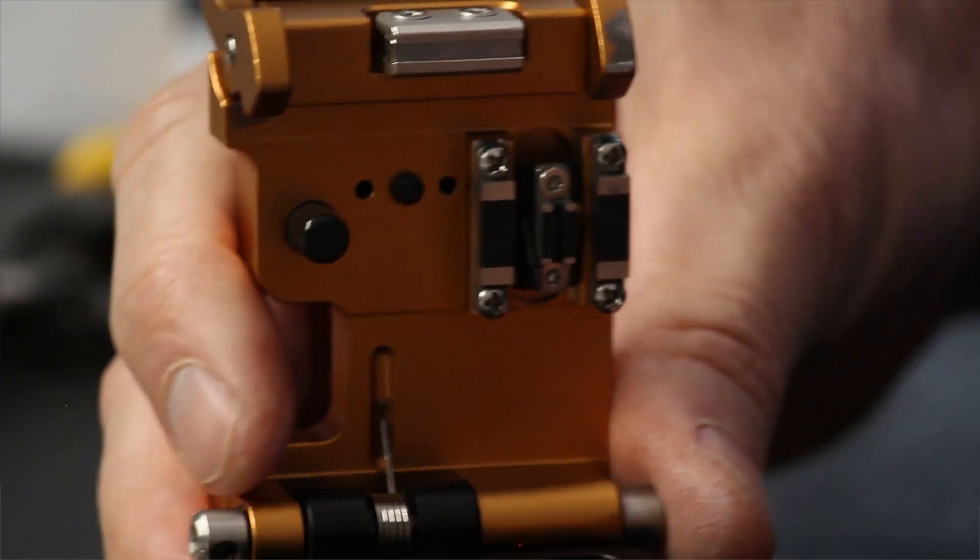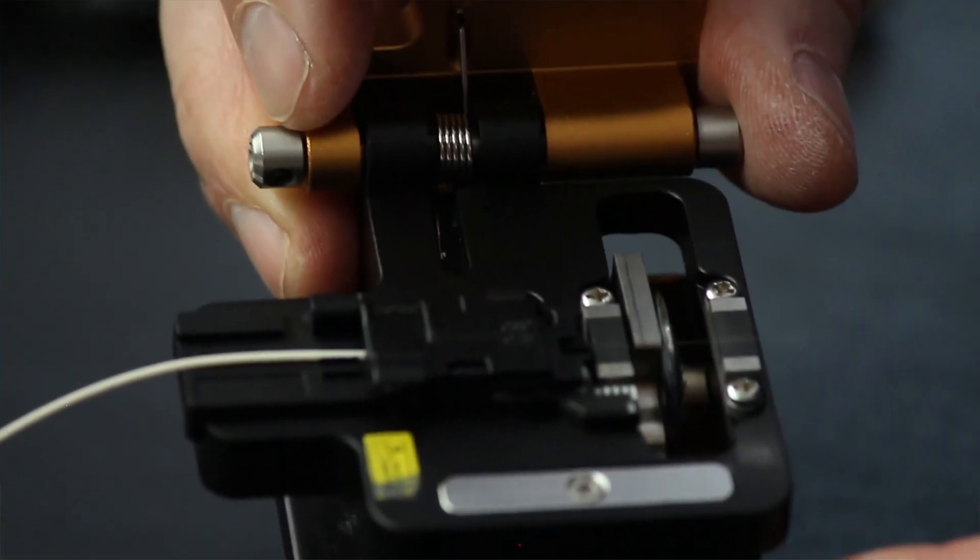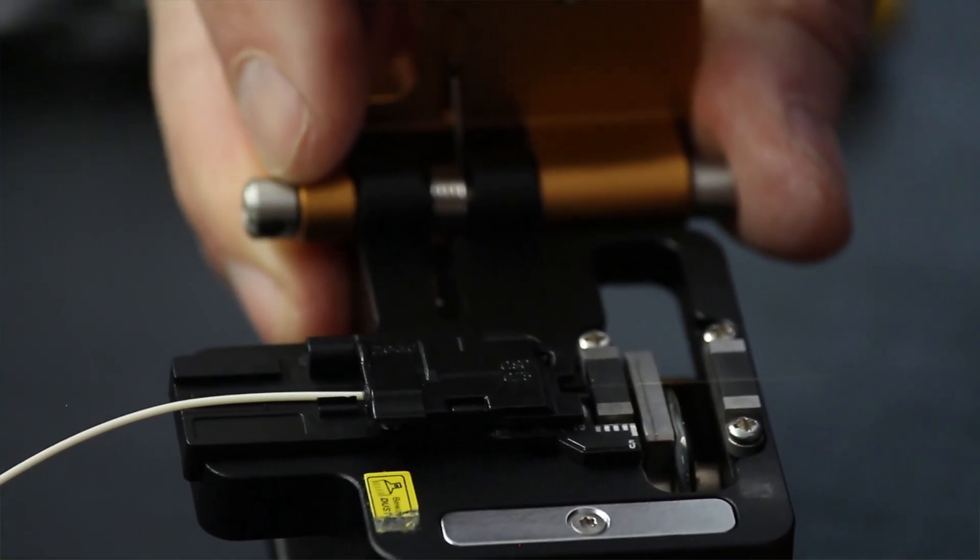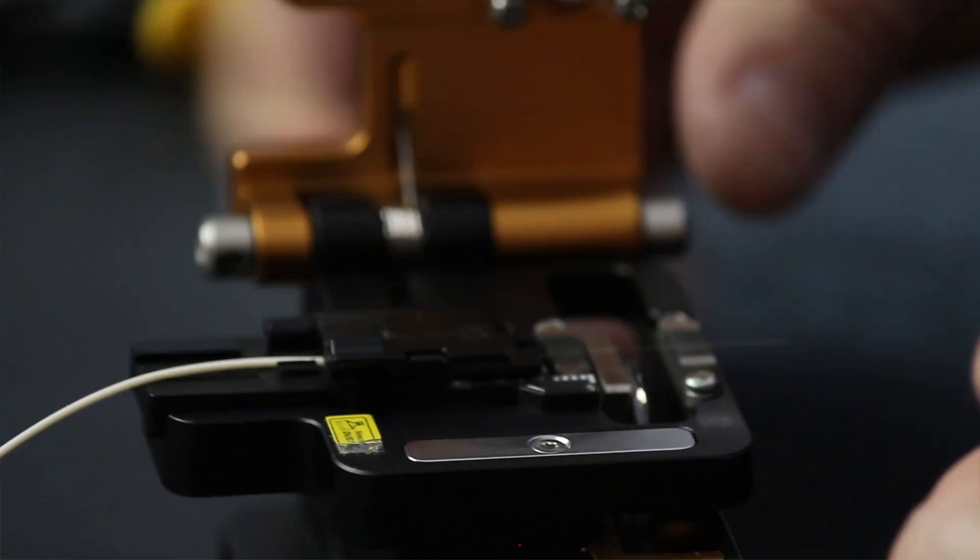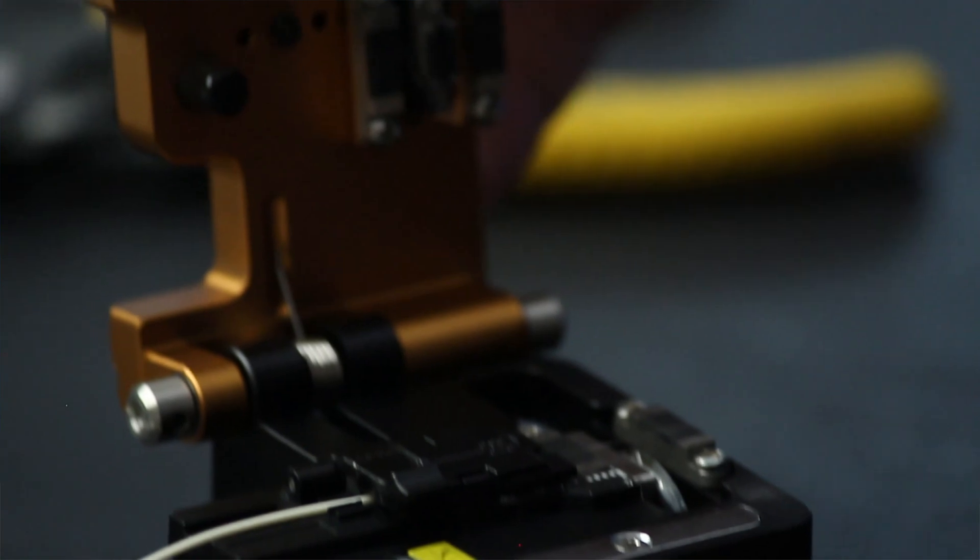And then there's a blade in here that slides up this way. And that's actually going to score the fiber. And once the lid is taken up, the tension will be released and the fiber will break. So that's how it's done.